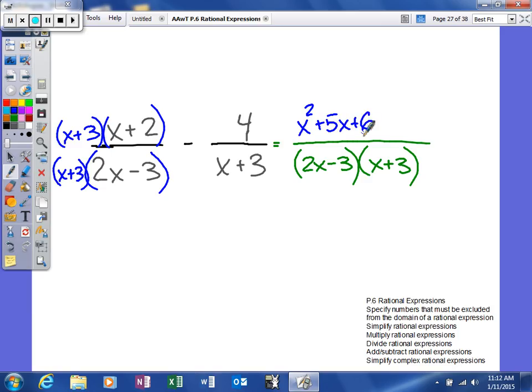Over here, to get my common denominator, I'm going to multiply the top and the bottom by 2x minus 3.